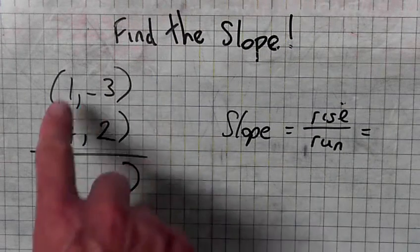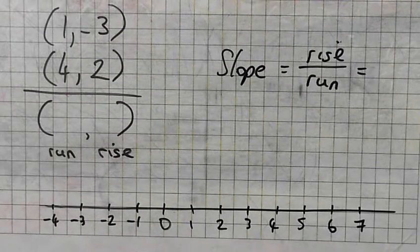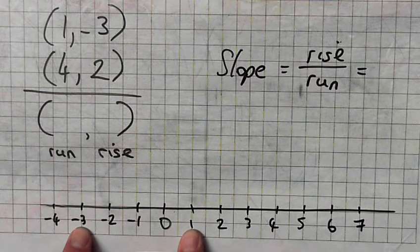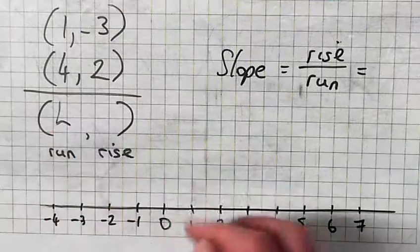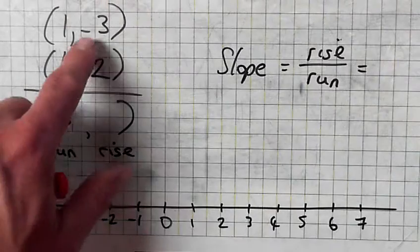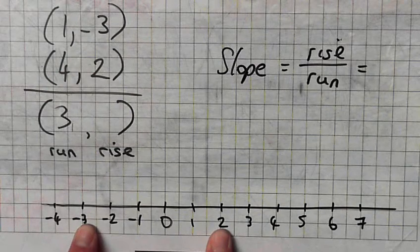Right, we'll find the slope between the two points: 1, minus 3, and 4, 2. What's the gap between 1 and minus 3? The gap is? 4. Sorry, the gap between 1 and 4 is 3. What's the gap between minus 3 and 2? 5 of a gap. 5.